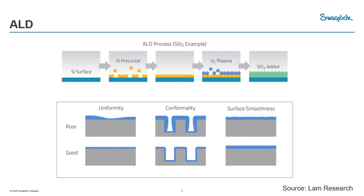ALD is desired due to its excellent uniformity, conformality of thickness, and surface quality. These are the three key benefits of ALD over conventional CVD processes. In the ALD process, we are manipulating a new kind of materials or gases, and most of these gases come in the form of low vapor pressure — LVP. We will talk more about LVP and how it affects the ALD process in the later slides.